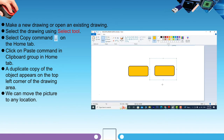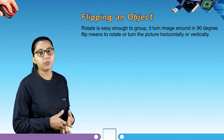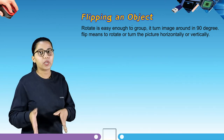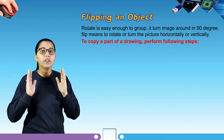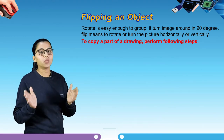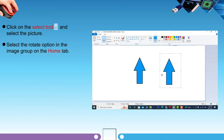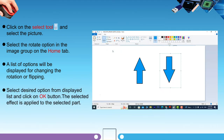Our next topic is flipping an object. Rotate allows you to turn an image around by 90 degrees. Flip means to rotate or turn the picture horizontally or vertically. To flip a part of an object: click on the select tool and select the picture, select the rotate option in the image group on the home tab. A list of options will be displayed for changing the rotation or flipping. Select the desired option from the displayed list and click OK; the selected effect is applied to the selected part.